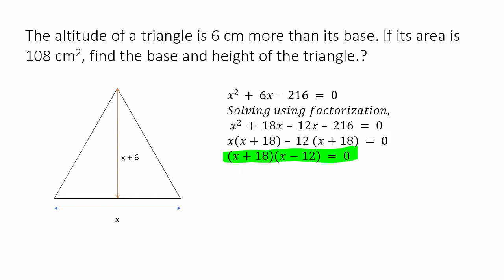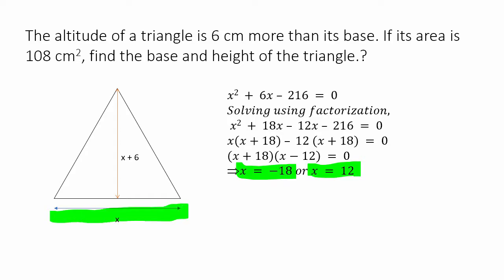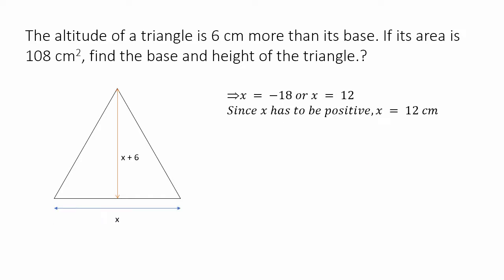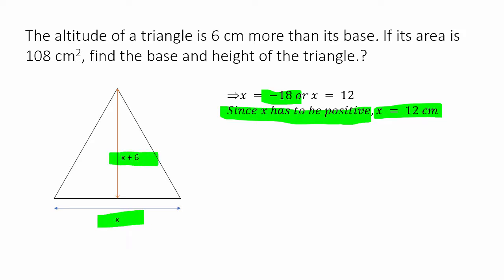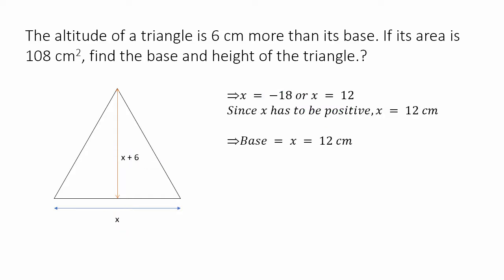Either x plus 18 equals 0 or x minus 12 equals 0. So x is either minus 18 or x is 12. Since x is the base, the base cannot be negative, so x must be positive. Therefore x equals 12. The base is 12 centimetres and the height is 12 plus 6, which is 18 centimetres.